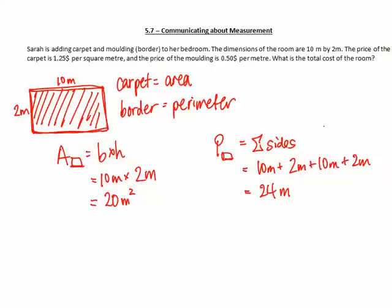Now, we need to find the total cost of the room. We have to look at the cost of the carpet and the cost of the border. The cost is equal to price times the area of the room. So the price we were given is $1.25. Just take a look at this unit. It costs $1.25 for each squared meter.